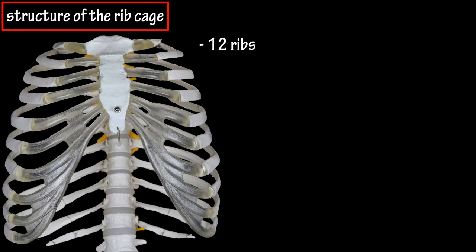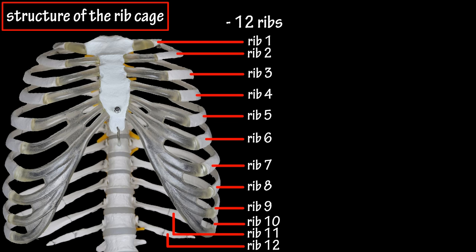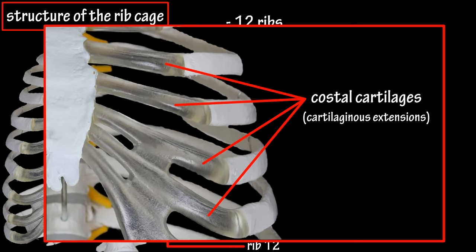There are a total of 12 ribs, and they originate on or between the thoracic vertebrae in the vertebral column, and they wrap around the sides of your body and end in the front. Ribs 1 through 7 are called true ribs because they individually connect to the sternum by way of cartilaginous extensions called costal cartilages, which you can see here in this model.